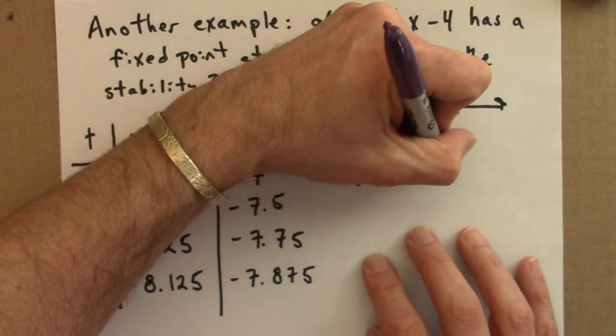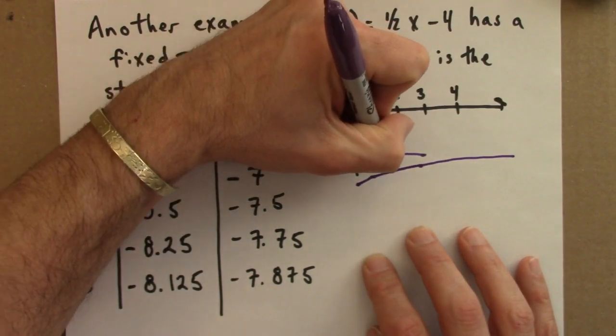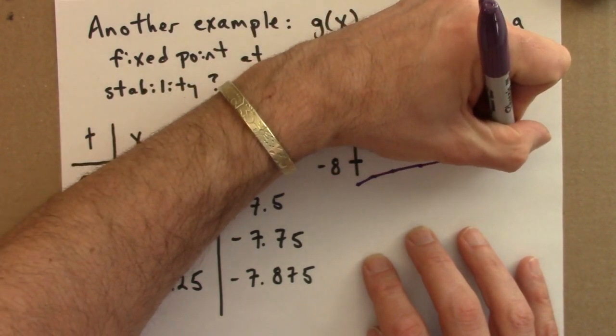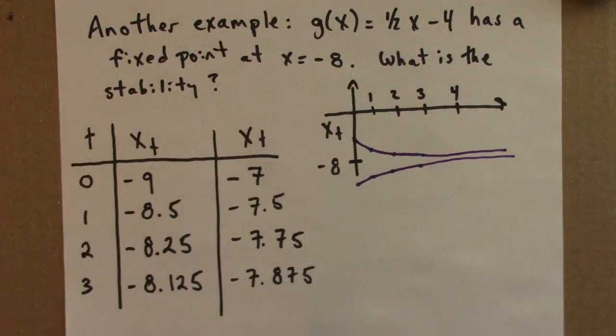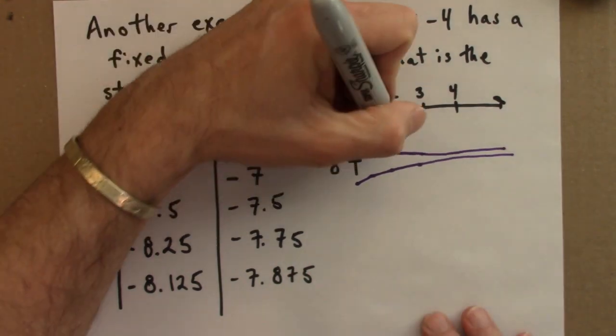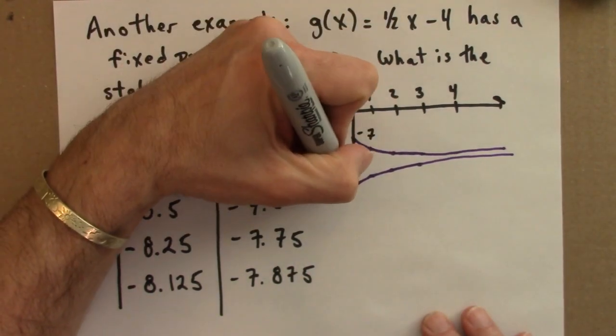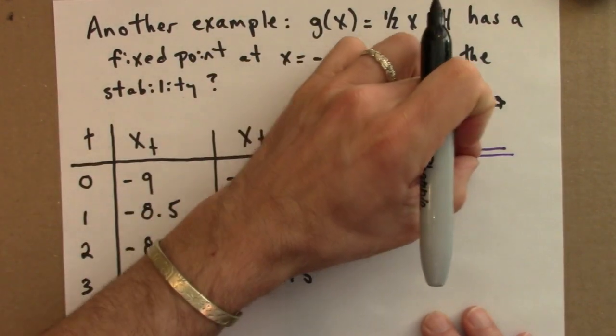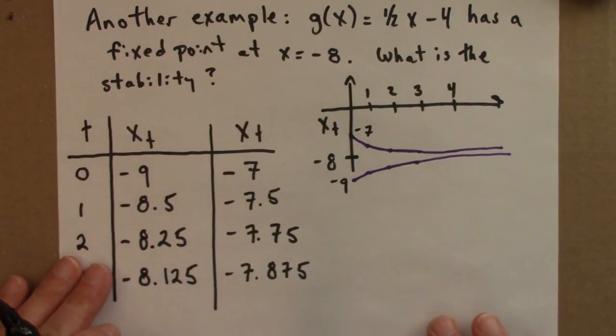If I connect the dots, I would see something like this. Both of these initial conditions, minus 7 and minus 9, get closer to minus 8 as time goes forward.